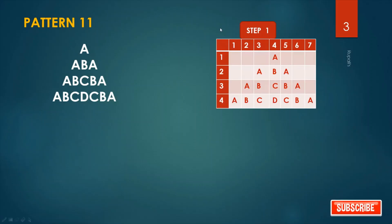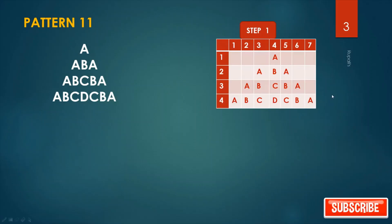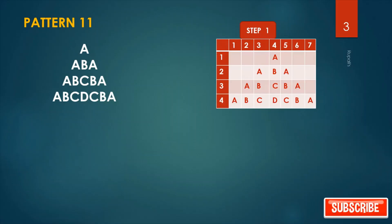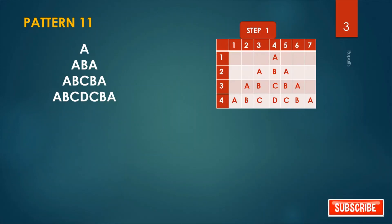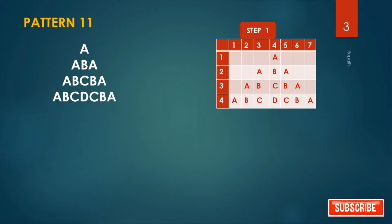Step number one: how many rows and how many columns are there? Four rows and seven columns are there. So first, plot this alphabet accordingly.